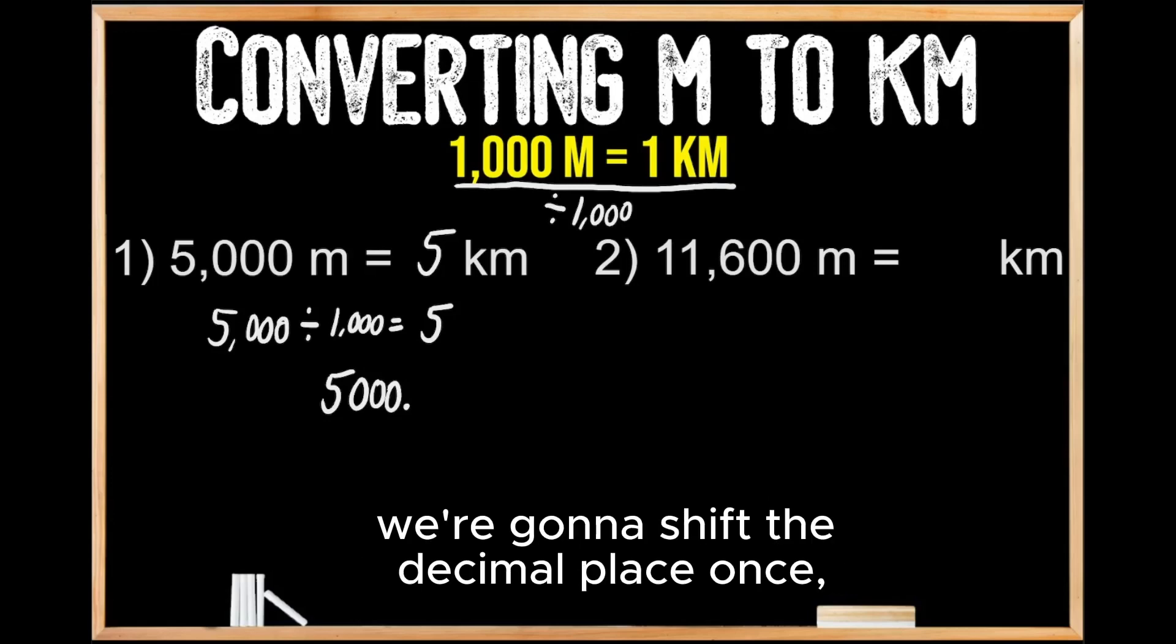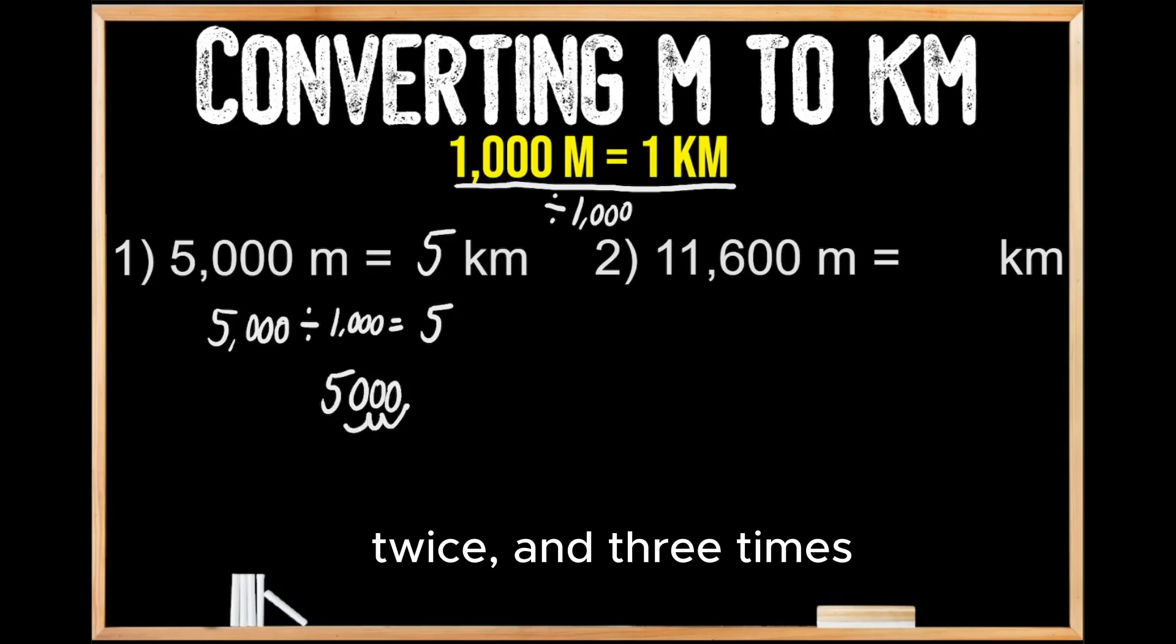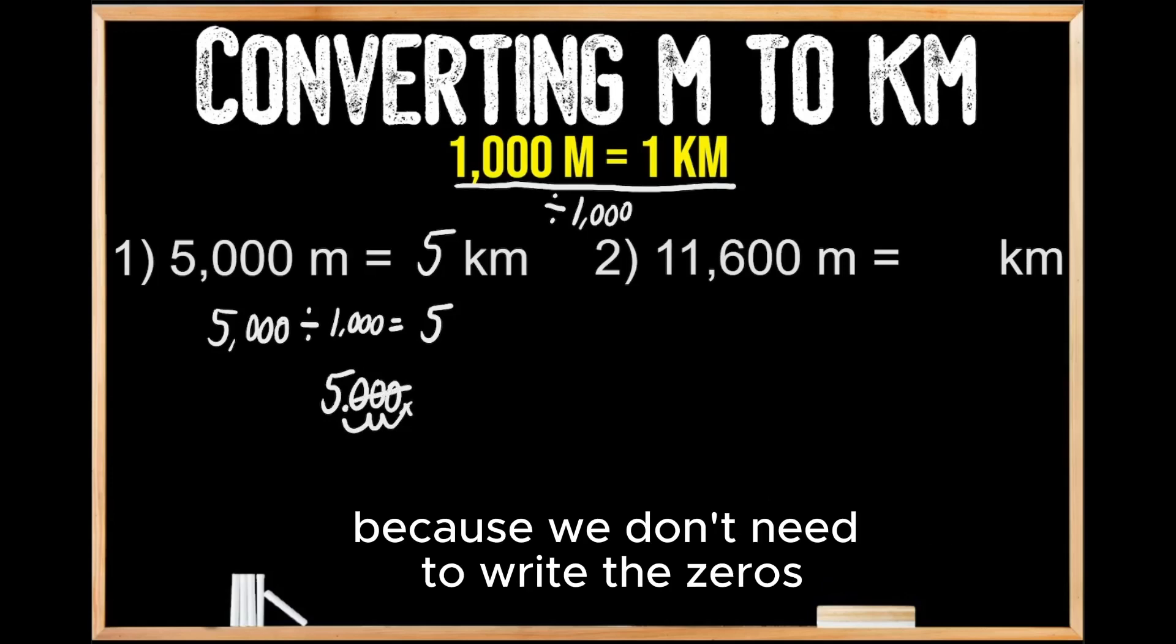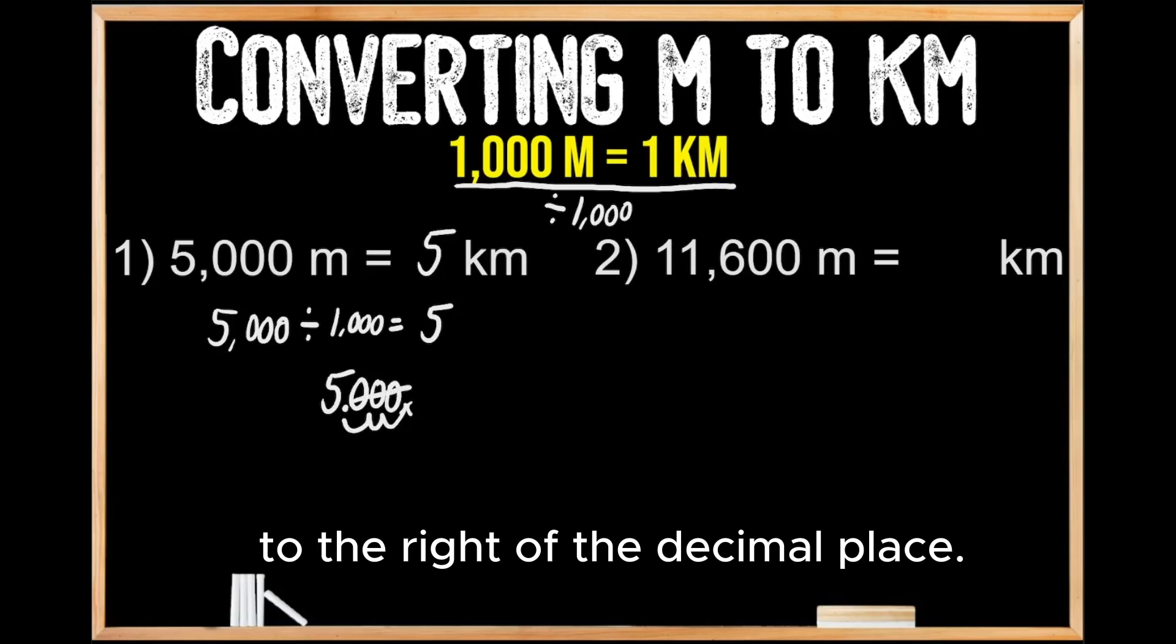So for 5,000, we're going to shift the decimal place once, twice, and three times to divide 5,000 by 1,000, giving us the whole number of five, because we don't need to write the zeros to the right of the decimal place. So now let's give this a try for question number two.